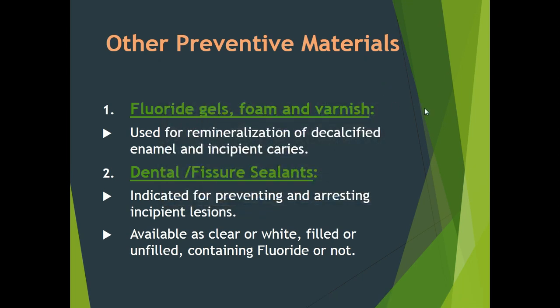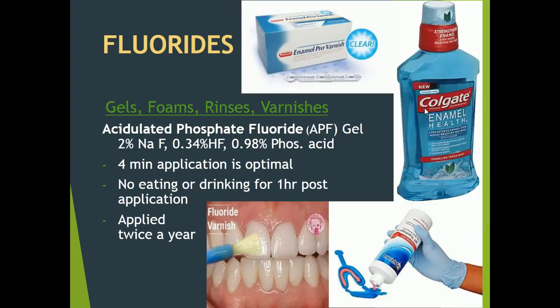Fluorides are available in the form of gels, foam, and varnish. Fluorides are used for remineralization of decalcified enamel and incipient caries, whereas pit and fissure sealants are indicated for preventing and arresting incipient lesions. Pit and fissure sealants are available as clear or white, filled or unfilled, containing fluoride or not. Fluorides are also available in the form of mouthwash and varnishes.